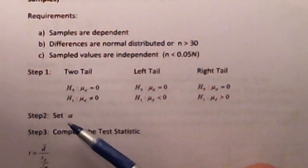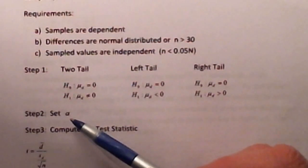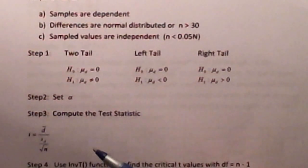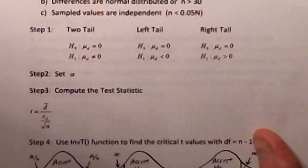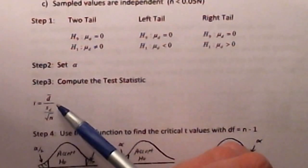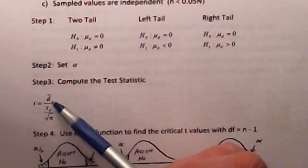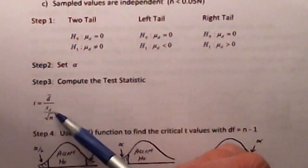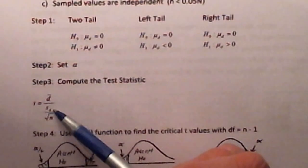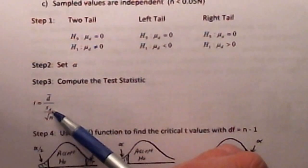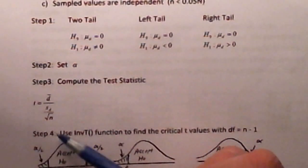Step number two is always establishing the level of significance, or the probability of committing a type 1 error. We normally test at 1%, 5%, or 10%. The test statistic for such a test is distributed according to the Student T distribution. It is going to be this ratio of the mean difference from the two samples chosen divided by the standard error of the sampling distribution — that is, the standard deviation of the differences between the samples divided by the square root of the sample size.